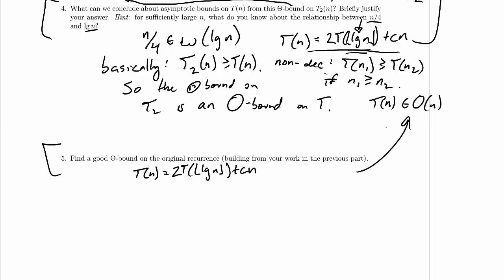Well in the previous part we already found that t of n is in O of n, and if that's a tight bound we just want to know t of n is in omega of n, and that turns out to be really easy.